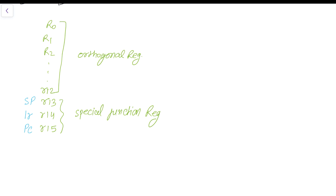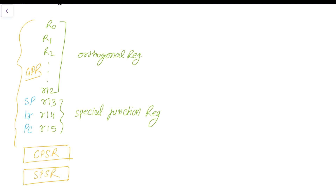The ARM processor does not only have these 16 general purpose registers. There are two more registers: CPSR, the current program status register, and SPSR, the saved program status register. So the total becomes 18 registers visible to the user.